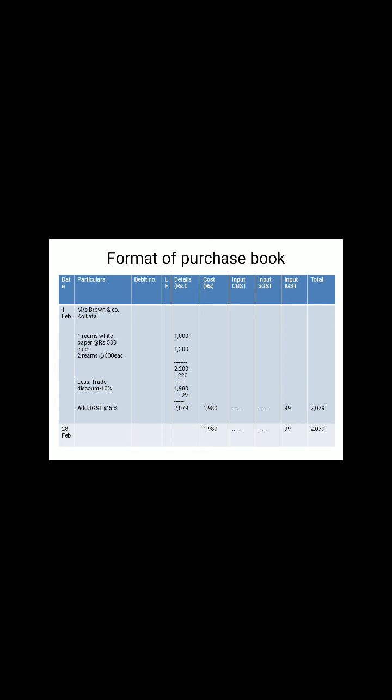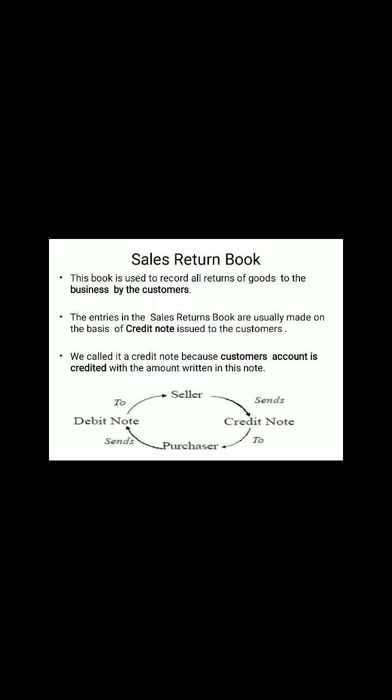After deducting the discount — for example 5% on 1980 — apply the rate as already done in the purchase book. Calculate the figures for each date: 1st February, 2nd February, 3rd February. If the names of suppliers are different, list their details accordingly. In this manner the purchase returns book will be maintained.